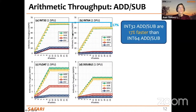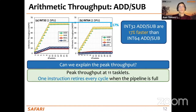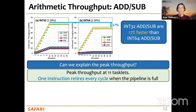There is also an interesting difference in maximum throughput between 32-bit and 64-bit integers — about 17%. Because peak throughput is achieved at 11 tasklets, we assume the whole pipeline is filled with 11 or more tasklets. In a pipeline processor, this means every cycle one instruction completes — a throughput of one instruction per cycle.